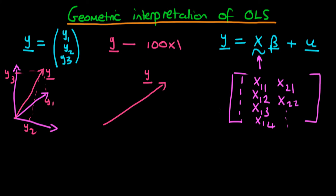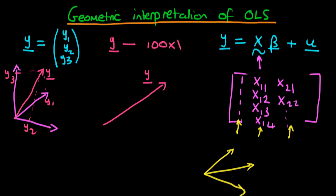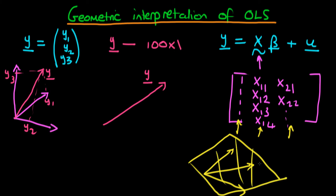We can think about each of these respective columns as representing a particular vector space — in other words, a vector in space. If we essentially take each of these vectors — the first vector, which is a vector of ones, the second vector of the second independent variable, and the third vector of the third independent variable — then we can think about the space which spans these three vectors as a sort of plane, because we're dealing in some higher-dimensional space.